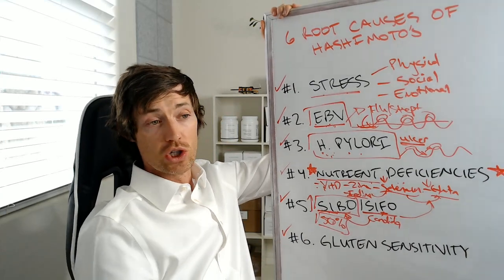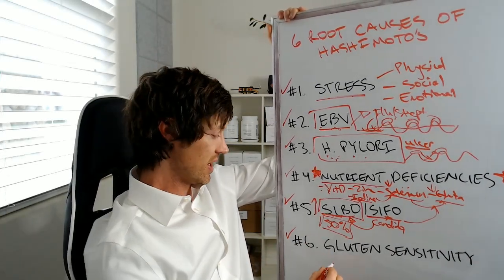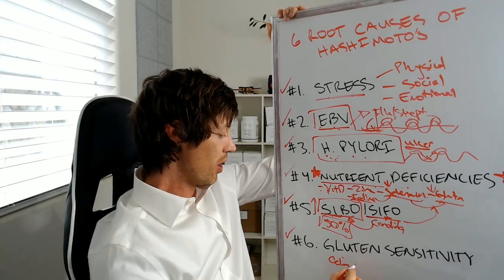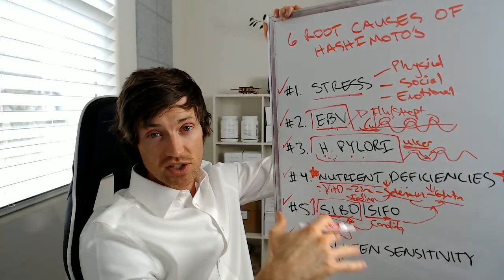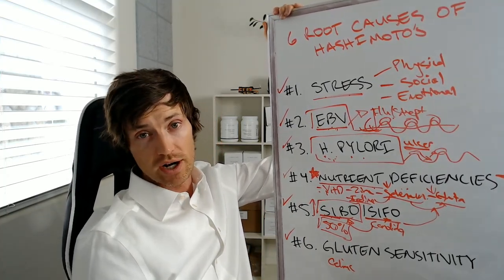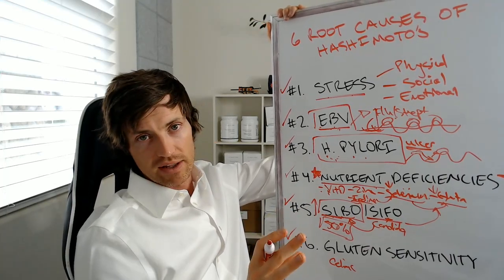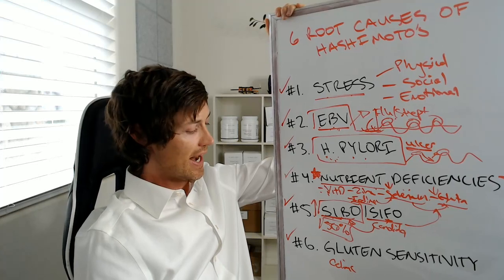Then the last one would be gluten sensitivity. So gluten sensitivity, I'm not talking specifically about celiac disease, although that is included in here. I'm talking about basically anybody who cannot tolerate gluten, right? So gluten is commonly found in a lot of wheat and bread products. It's more complicated than that. So most people know the gist of gluten and what it is and how it's functioning.